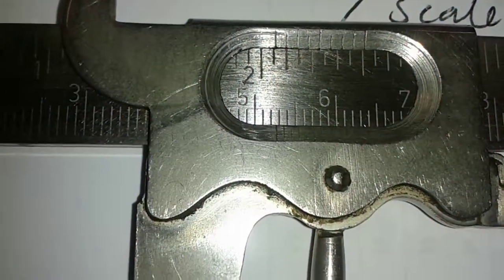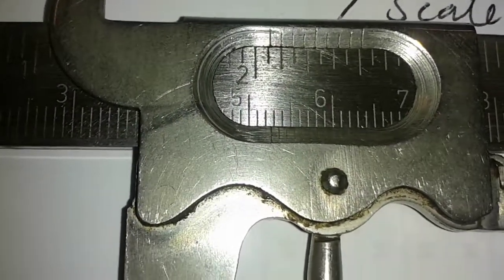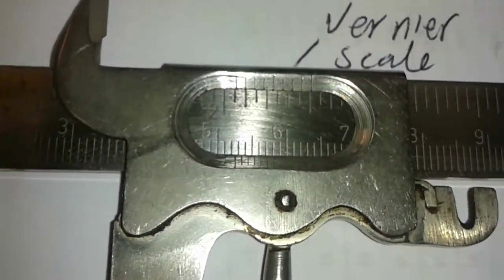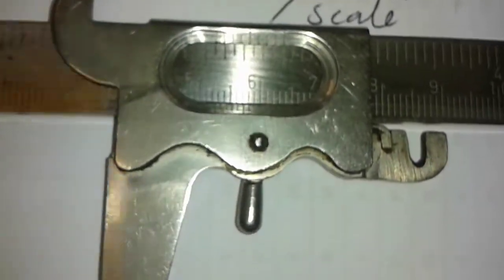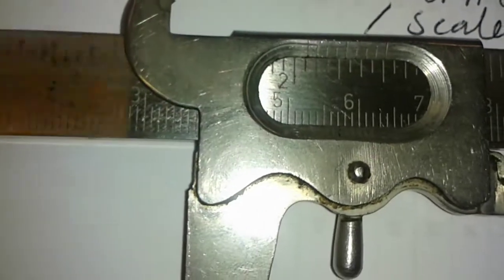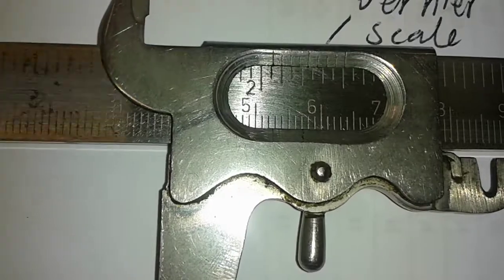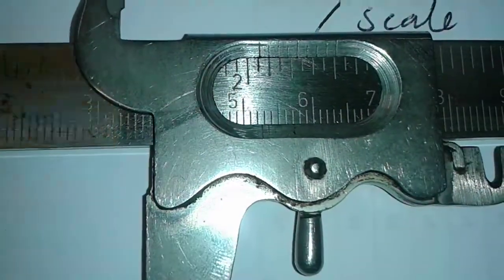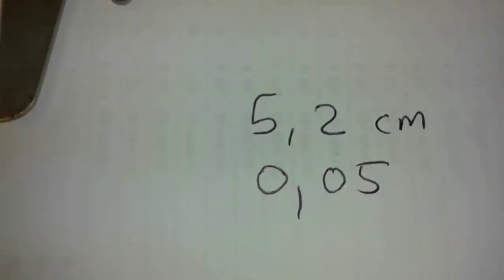In this case it is 5.2, as you can see on the main scale. Then you take the reading on the vernier scale where it exactly coincides with a line on the main scale. At this point that should be 5, as it is right in between. You add a decimal point in front, so that gives 0.5.